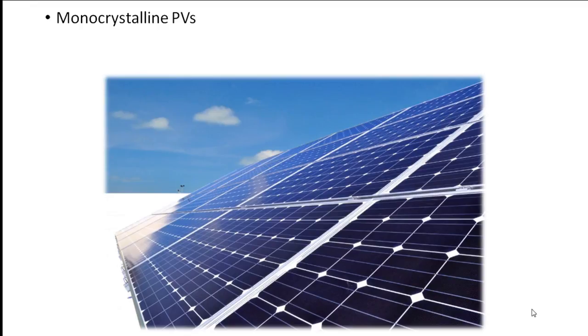Monocrystalline cells boast the highest efficiency of all conventional PV cells, around 15%. Efficiencies vary from one manufacturer to the next, ranging from 14% to 17%.